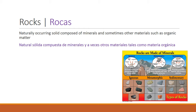Rocks are naturally occurring solids composed of minerals, and sometimes other materials such as organic matter — for example, the remnants of fossils. There are three types of rock: igneous, metamorphic, and sedimentary. Igneous rocks are minerals fused together after being melted. Metamorphic rocks are minerals reforming and fusing together with heat and pressure. Sedimentary rocks are minerals cemented together with pressure over time.